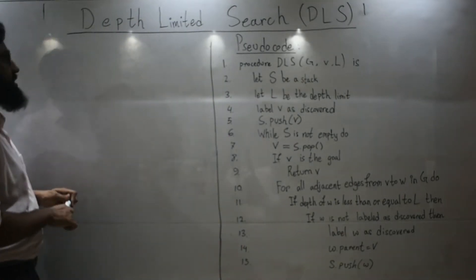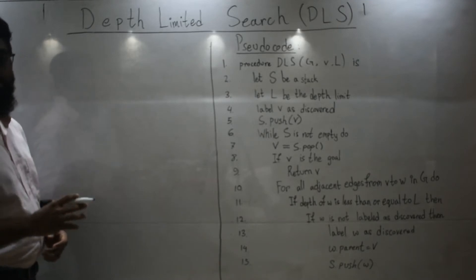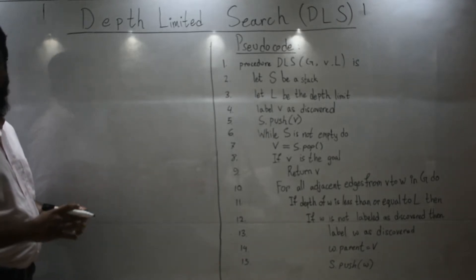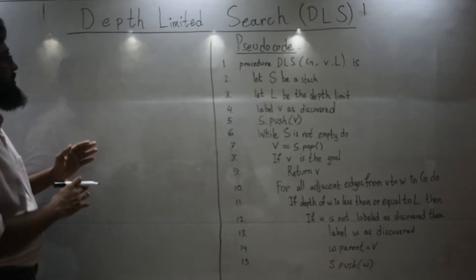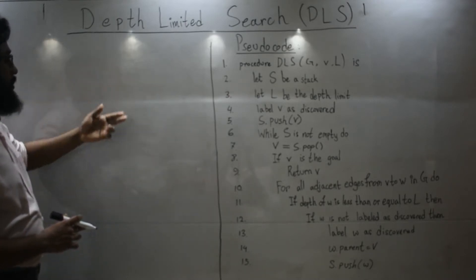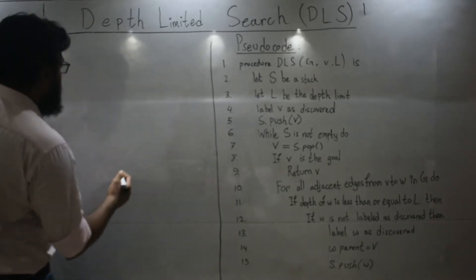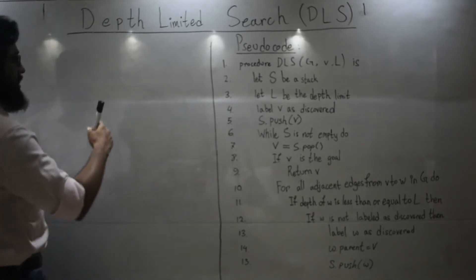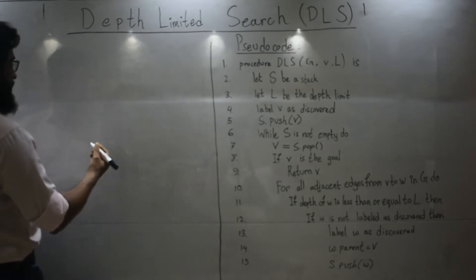Depth limited search is just like depth first search. The only difference is that in depth limited search your algorithm will traverse up to a certain limit instead of the whole depth of your graph or tree.